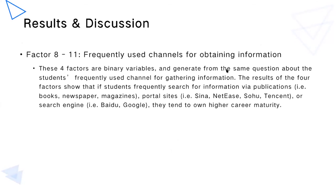Factors 8 to 11 come from the same question about frequently used channels for obtaining information, and all four are binary variables. The results show that students who frequently search for information via publications such as books, newspapers, magazines, portal sites, or search engines tend to have higher career maturity. However, students who primarily gain knowledge through person-to-person communication tend to have lower career maturity, suggesting that objective channels are more reliable than subjective channels for acquiring career information.